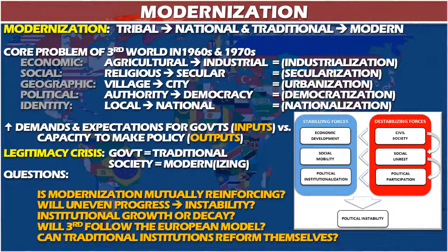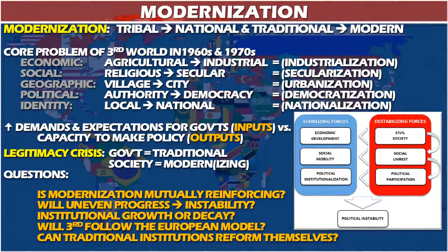Modernization also creates a legitimacy crisis, because most governments exist on a foundation of traditional legitimacy — whether they're kings, children of the previous king, or royalty rooted in village life. When society becomes more modern, people want more rational, legal rules and more say in their outcomes. If you look at the chart referencing Samuel Huntington's book Political Order in Changing Societies, it notes both the stabilizing and destabilizing forces that modernization sets in motion.